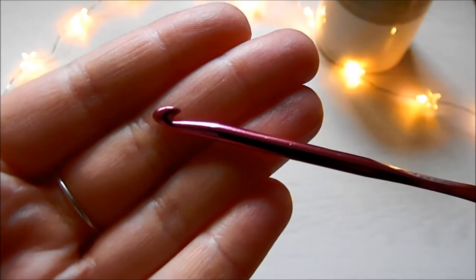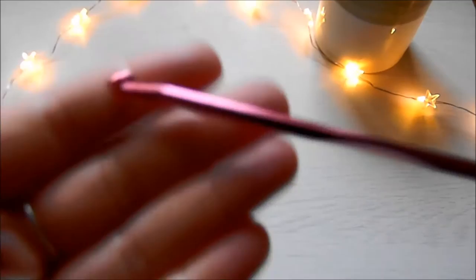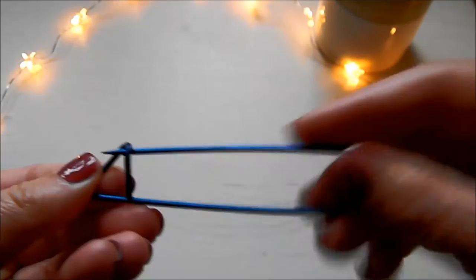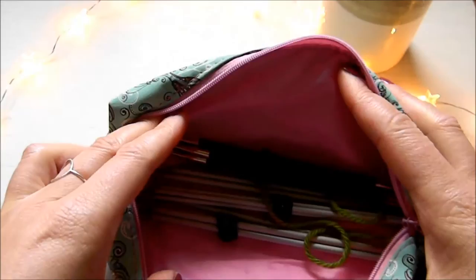I always have a crochet hook and I use it for the provisional cast on when I do the toe-up socks. I also use it for crochet and I think I've done a video, I've done a granny square video you can go ahead and watch that one. A stitch holder, I don't use them all the time.